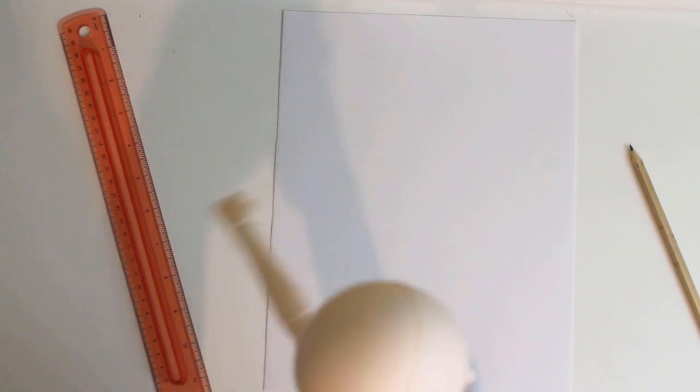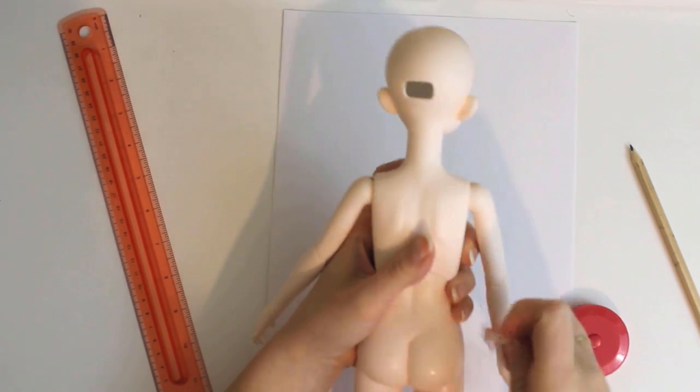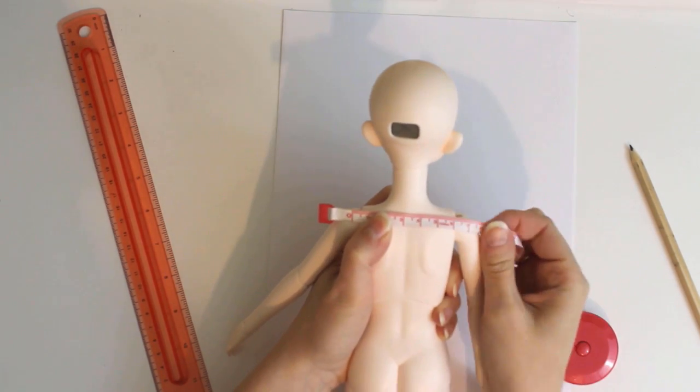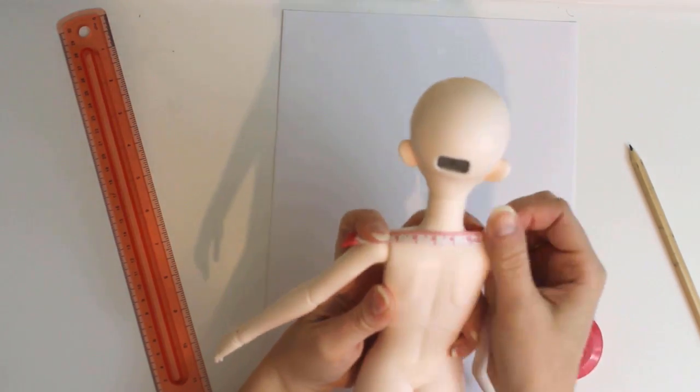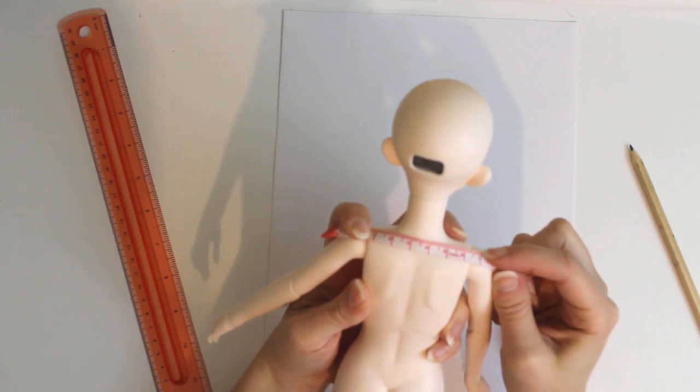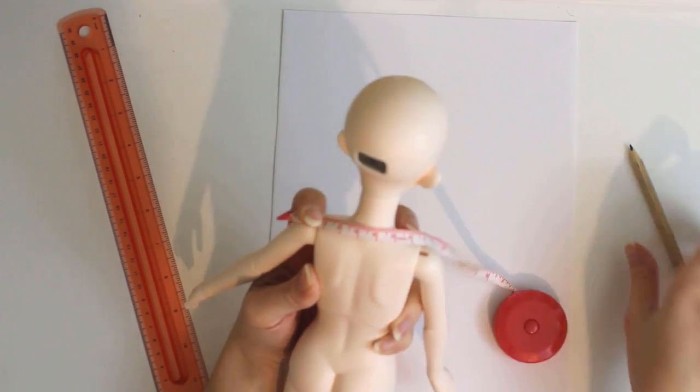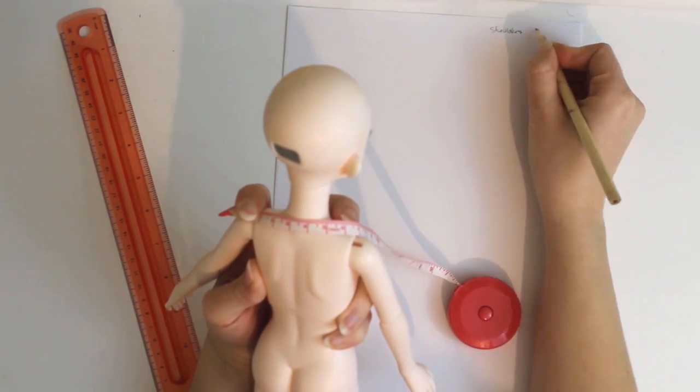Since the sizing is so small, I'm measuring in centimeters. The first measurement to take is the width of the shoulders. Measure across the doll's back, from shoulder top to shoulder top. In dolls, it works best to measure from the middle of the top of each arm. For me, this is 7 centimeters.